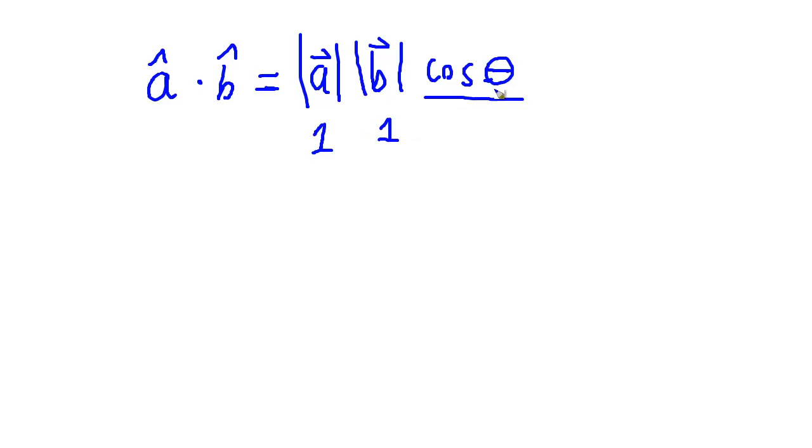one times one is cosine theta. And we'll use that when we do computer graphics and especially the lighting equations, when we start to light our scene, we'll get some normalized vectors, we'll dot them together, and it gives us the cosine of the angle between them.